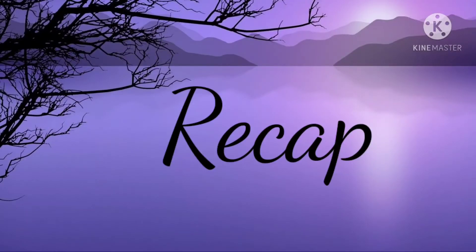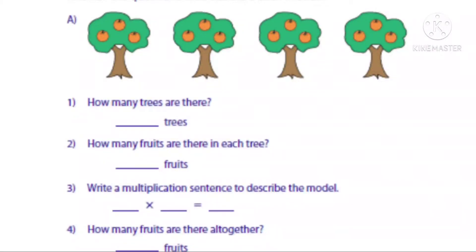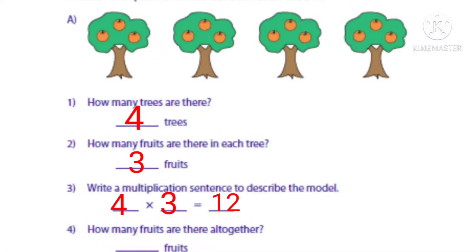Now let's recall the previous class chapter. How many trees are there? Tell me children. Four trees. How many fruits are there in each tree? Shall we count? One, two, three — three fruits. Write the multiplication sentence to describe the model: four multiplied by three equal to twelve. How many fruits are there altogether? Twelve fruits.